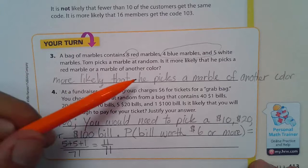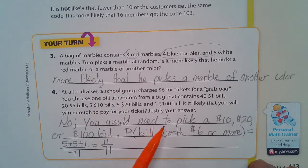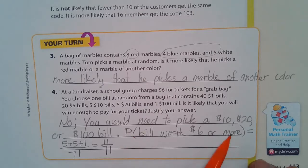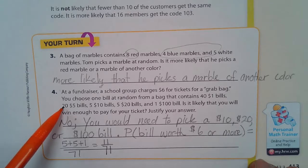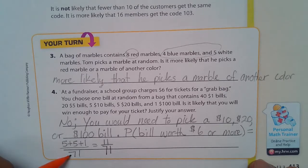So we're looking at, can you pick one of these, is it likely that you will win at least $6? Well, how many bills do we have? We have 40, 60, 65, 70, 71. So there's 71 right there.